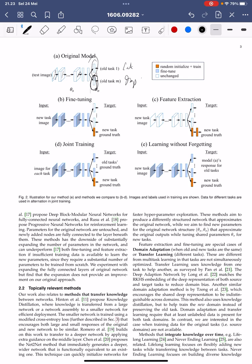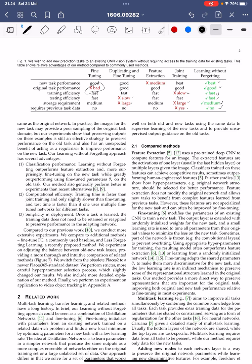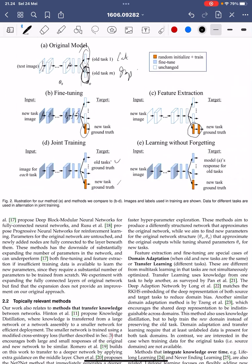For fine-tuning, all parameters are adjusted to the new task using the new ground truth — this is a multi-head output. For feature extraction, the shared layers are frozen but the new task head is trained. For joint training, all tasks and ground truths are combined, which requires previous data. In Learning Without Forgetting, we do not need previous data at all — only the original images from the new task are used, taking advantage of knowledge distillation.